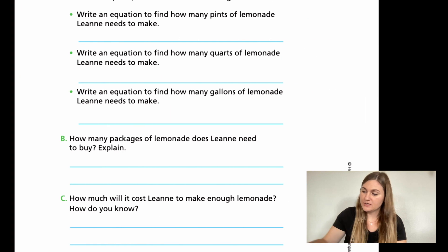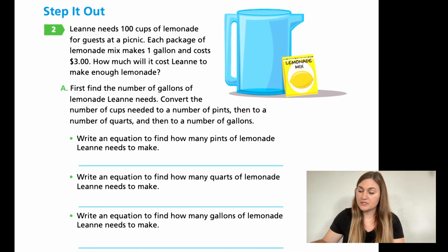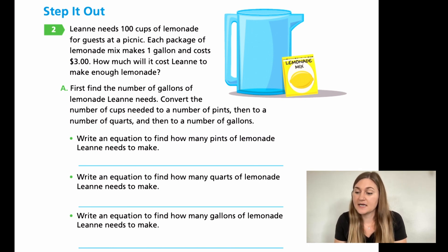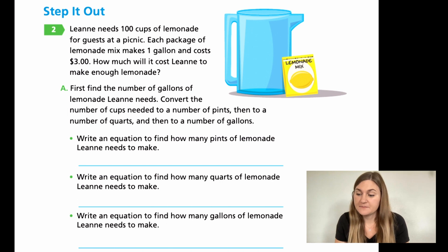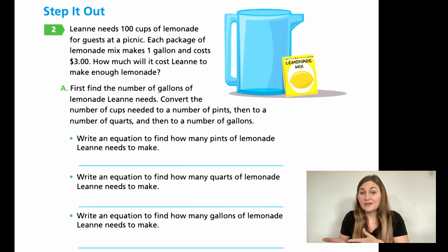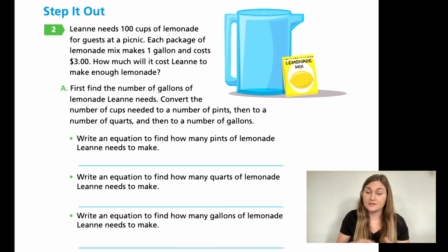Let's go ahead and flip the page to 302. I'm going to go over these questions and then see how you do on your own, and then we'll solve them together. So for number two, it says Leanne needs a hundred cups of lemonade for guests at a picnic. Each package of lemonade mix makes one gallon and costs $3. So how much will it cost Leanne to make enough lemonade? She needs a hundred cups, but the package is only in gallons, so we need to figure out how many cups one gallon makes and then talk about cost. There are lots of steps here.